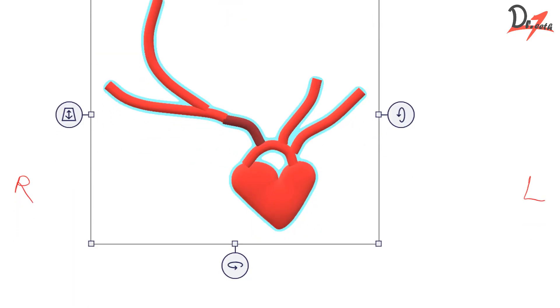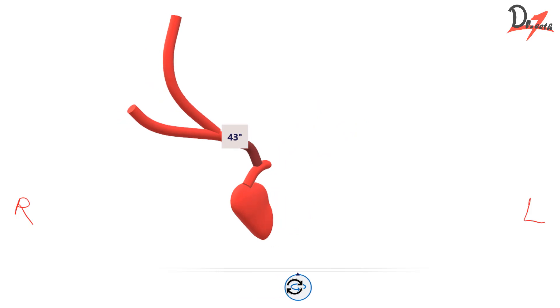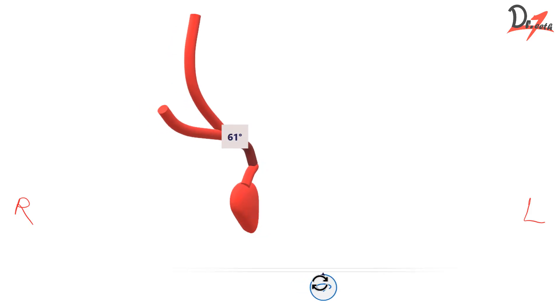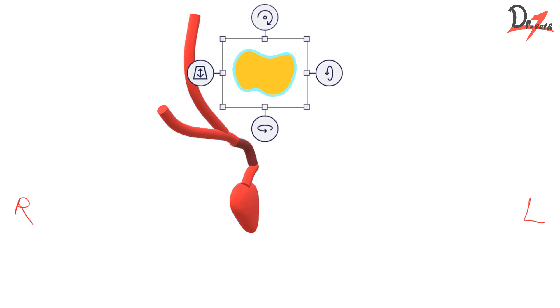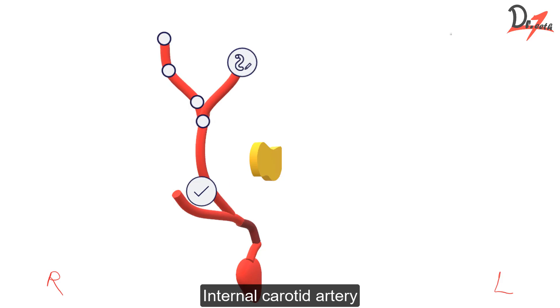Let us suppose we were watching the person from the front. Now let us shift the person to his right-hand side — I am tilting this model a little laterally. So now we are having a look at the right face of that person. I will be drawing a face as well so that it gets easier. Let us suppose here we have our thyroid gland. Now this common carotid artery will divide into the external carotid artery and the internal carotid artery.